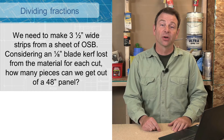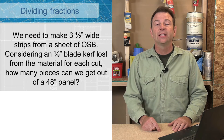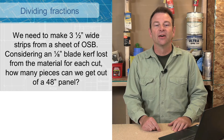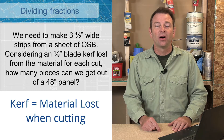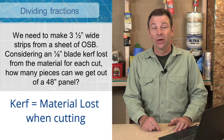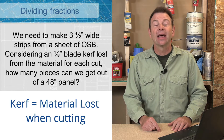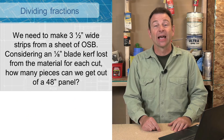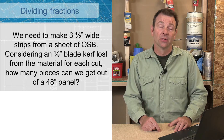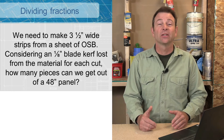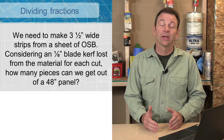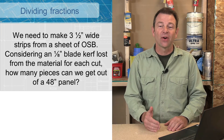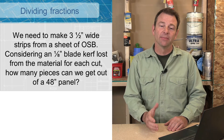I'm going to read this word problem and then we're going to solve for it. We need to make three and a half inch wide strips from a sheet of OSB, considering an eighth inch blade kerf lost from the material for each cut. How many pieces can we get out of a 48 inch panel? This is a situation where we need to decide how many parts we can make considering these fractions and dimensions.